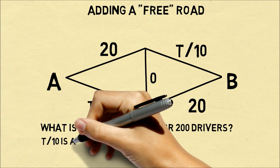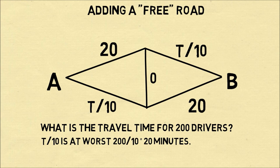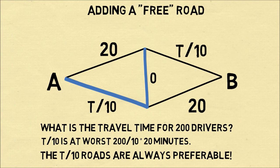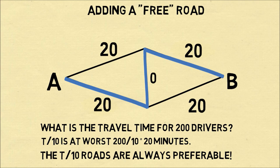One observation is that T over 10 will always be less than or equal to 20 minutes, even if all drivers take that road. Therefore, the T over 10 roads are always preferable, so all 200 drivers take these roads, and they take 20 minutes each.